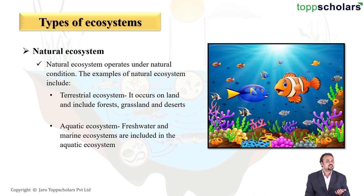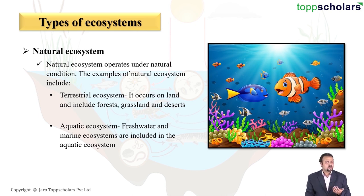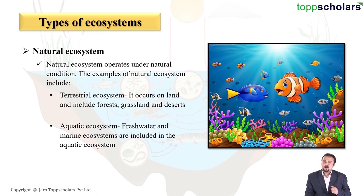Aquatic ecosystems are further divided into two types: freshwater, which includes rivers, ponds, and lakes; and marine water, which includes seas, oceans, and estuaries. What you can see above me is a very nice example of a marine water ecosystem.